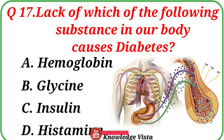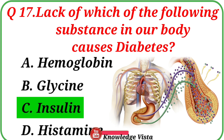Question number seventeen: Lack of which of the following substances in our body causes diabetes? Option A: Hemoglobin, B: Glycine, C: Insulin, D: Histamine. Correct answer is option C: Insulin.